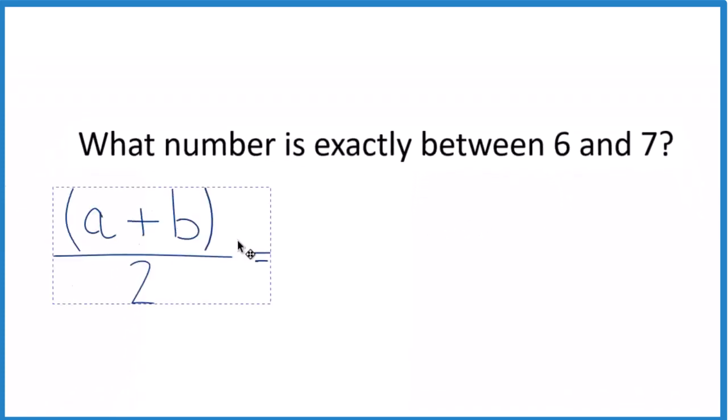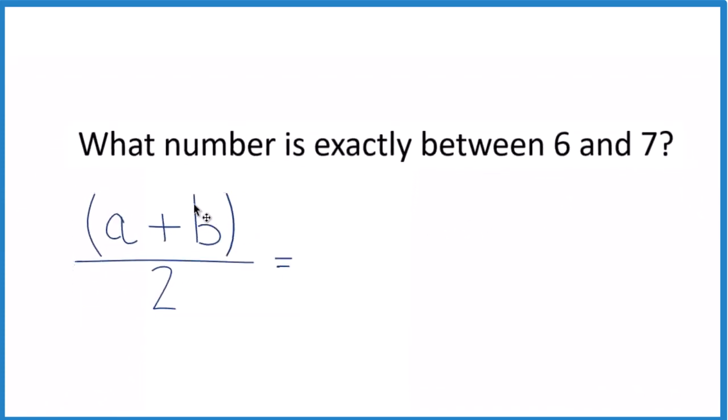You can kind of think of it this way, where you have A plus B, you add those together, divide by 2. So 6, that would be A, 7 would be B. So 6 plus 7, and then we divide that by 2.